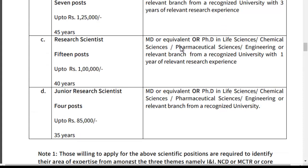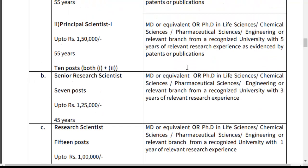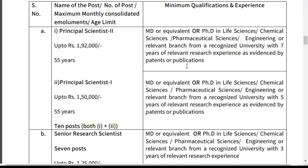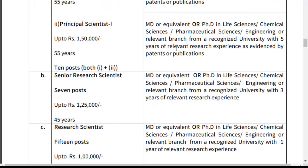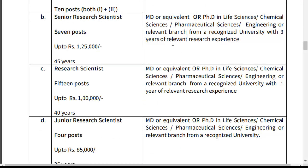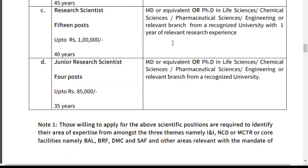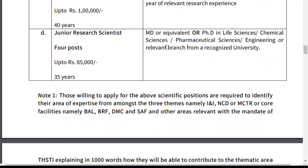Research Scientist — 15 posts, salary up to ₹1,00,000, age limit 40 years. Qualification: PhD in Life Sciences and Chemical Sciences, with 1 year relevant experience. Junior Research Scientist — salary up to ₹85,000, age limit 35 years. PhD in Life Sciences, Chemical Sciences, Pharmaceutical Sciences, or Engineering from a recognized university — no prior experience required.